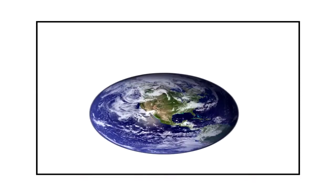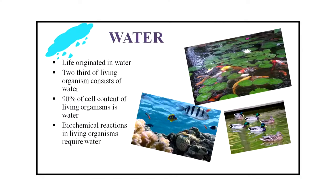Now we will discuss about conditions necessary for sustaining life on Earth. Life originated in water. Two-thirds of living organisms consist of water. 90% of the cell content of living organisms is water. Biochemical reactions in living organisms require water. The first condition which is necessary to sustain life on Earth is presence of water.